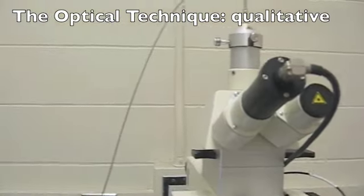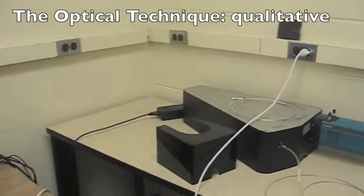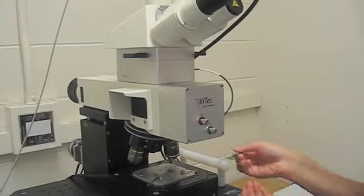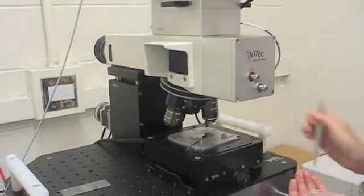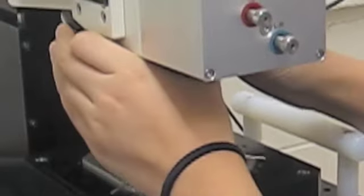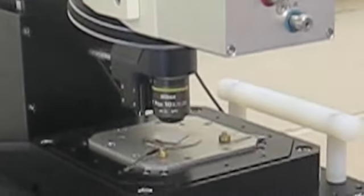In order to qualitatively determine the location of the graphene, you can use an optical microscope. The lens in this microscope has a magnification power of 100. Once you place a silicon wafer under the scope, you can hunt for the graphene as if you're searching for an island in the sea.